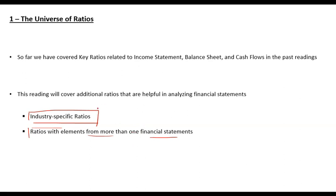For industry-specific ratios, different industries use specific ratios. For example, banks use the capital adequacy ratio, insurance companies use premium ratios, and consumer retail uses same-store sales ratios. We will not go into all those details — we will only be learning about the insurance industry, because its treatment and profitability ratios are very different from other industries.